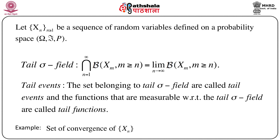As we know how to define a Borel sigma field generated by a random variable, let us consider a sequence of random variables Xm when m is greater than or equal to n, and let script B be the sigma field generated by all such random variables — that means Xn, Xn+1, and so on. Consider the intersection of those Borel sigma fields as the intersection from n equals 1 to infinity. We call this the tail sigma field. Since the intersection of sigma fields is also a sigma field, this is always a sigma field.